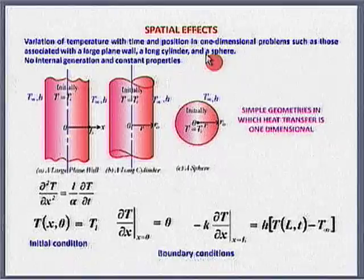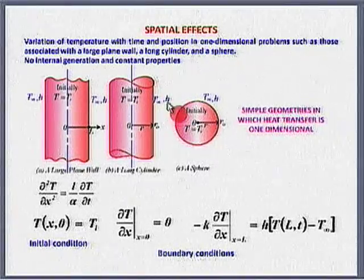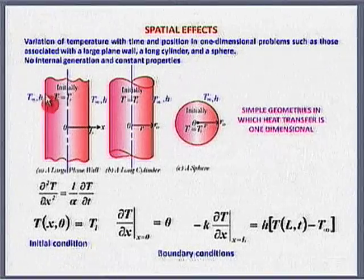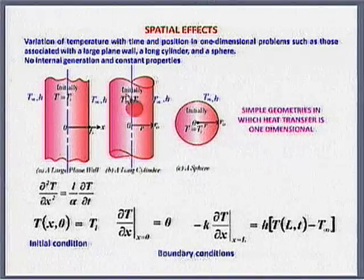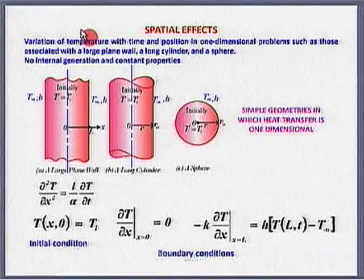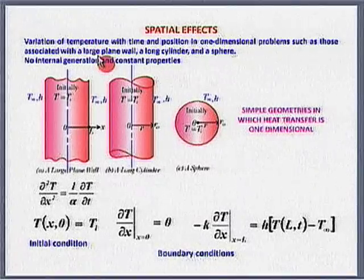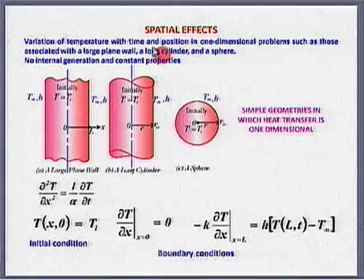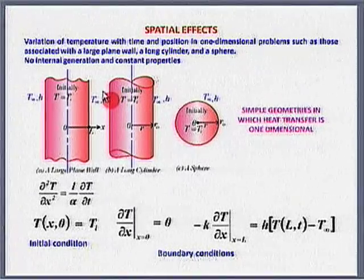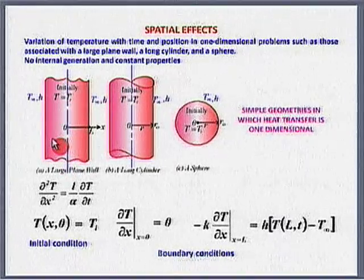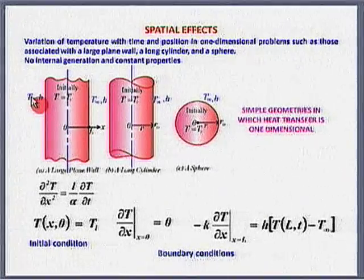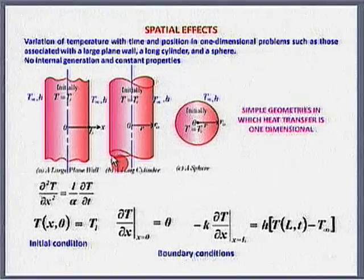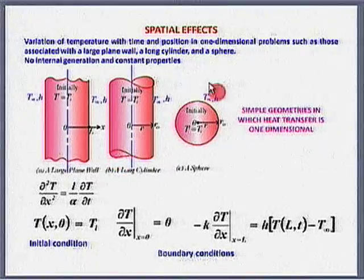Why is the word 'large' important for the plane wall, and why is 'long' important for the cylinder? When we deal with a short cylinder, if the length is comparable to the radius, then two-dimensional conduction comes into play. We would have a transient two-dimensional conduction problem if the L/D ratio is of the order of 1. A large plane wall has a finite thickness and extends in both directions to whatever length. A long cylinder has length much greater than its diameter.